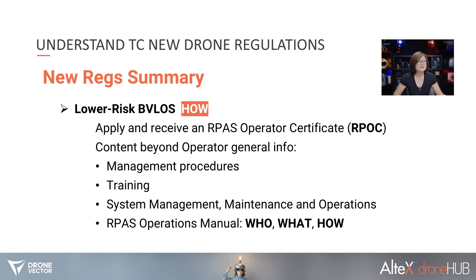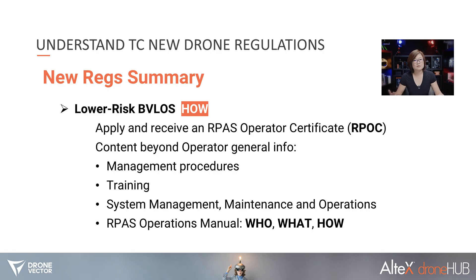There's also an RPAS operations manual — that's an official manual you need to have, not just for your RPOC application, but also when you operate lower risk BVLOS. You need to follow through the steps as indicated in the manual. In general, similar to the traditional SFOC application process, you need to define who's involved in your operation — not just the pilot, but also a visual observer, equipment maintenance team, coordinators checking airspace activities, and people following flight planning. Those are all the important people to address in your RPAS operations manual.